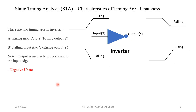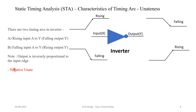Now let's see the example of an inverter. In an inverter, whenever there is a rising transition at the input the output will fall, and whenever there is a falling transition at the input the output will rise. So there is always an opposite transition happening — whenever there is an opposite transition it is called negative unate.